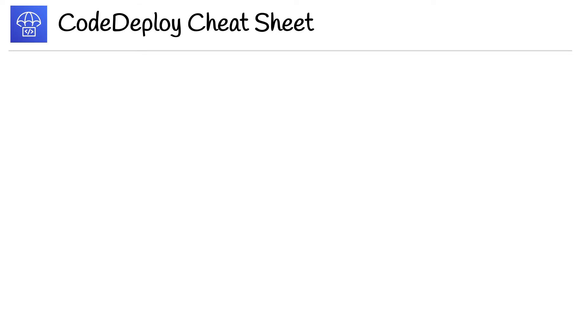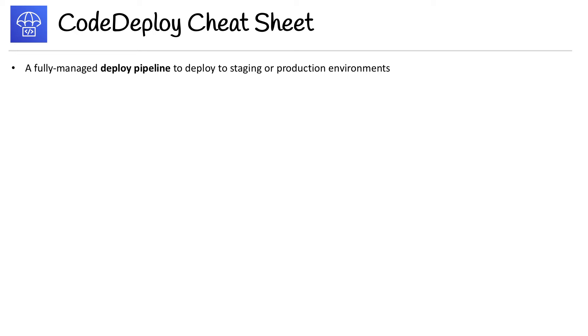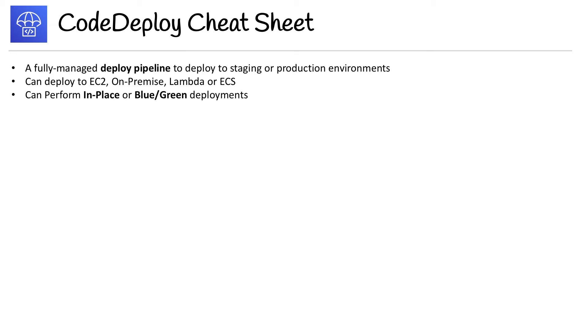We're on to the CodeDeploy cheat sheet. This is a fully managed deploy pipeline to deploy to staging and production environments. We can deploy to EC2, on-prem, Lambda, or ECS. We can perform in-place or blue-green deployments.